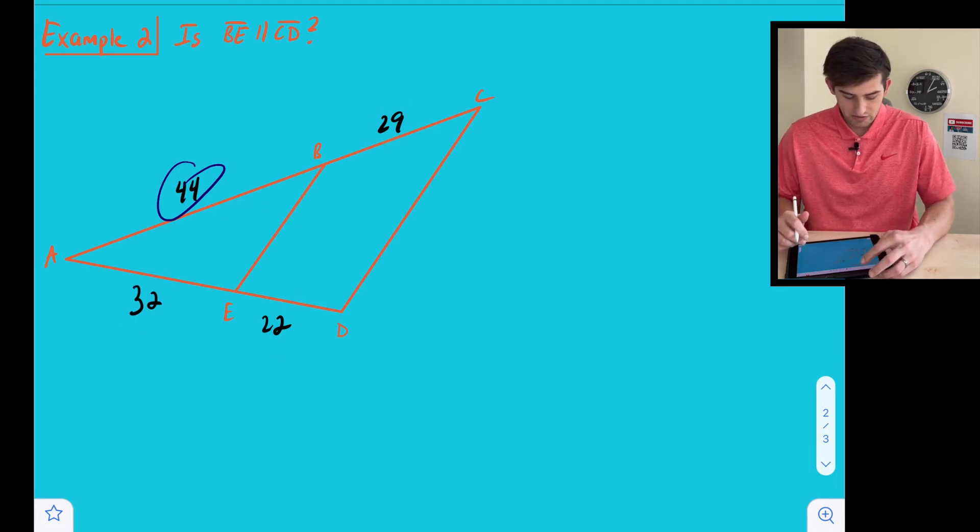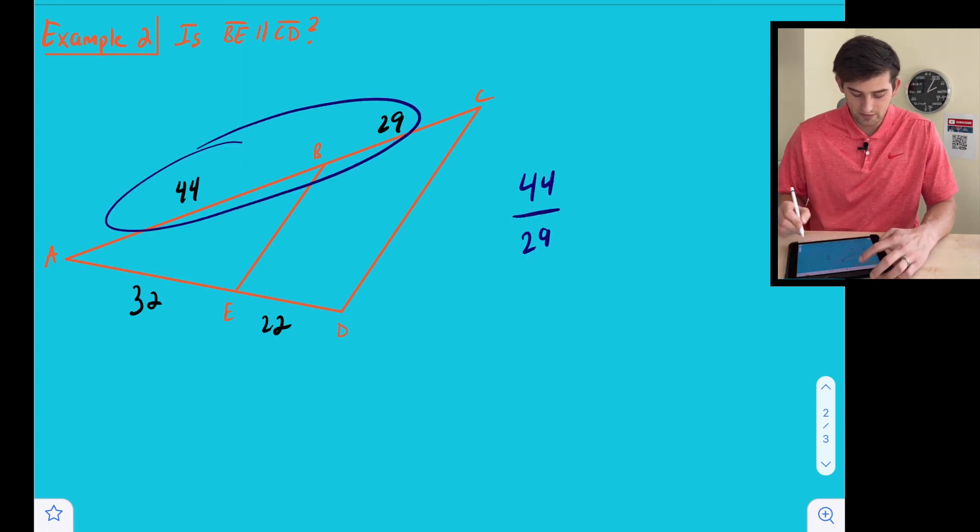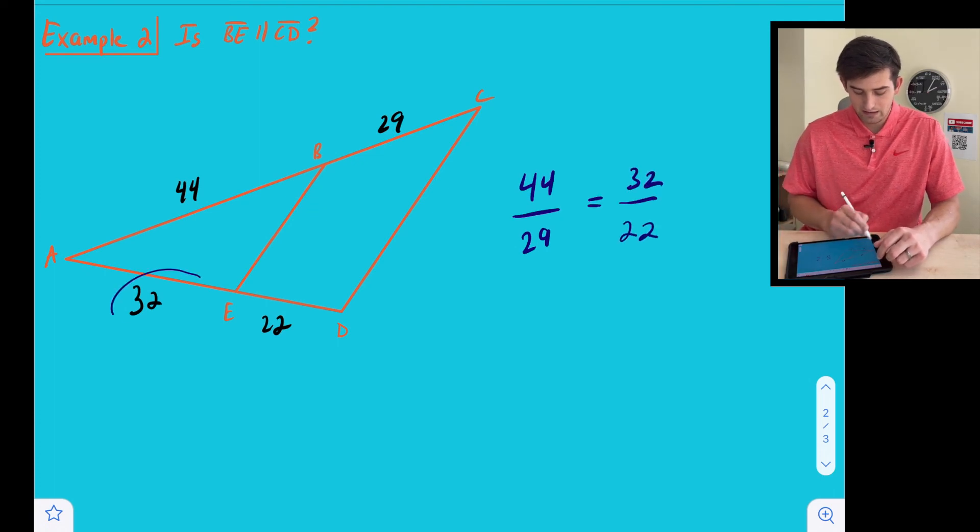So once again, there's different ways we could start our proportion. I'm just going to go ahead and say 44 over 29, so working with this side of the triangle, is equal to 32 over 22. Notice we did it in the same order there.